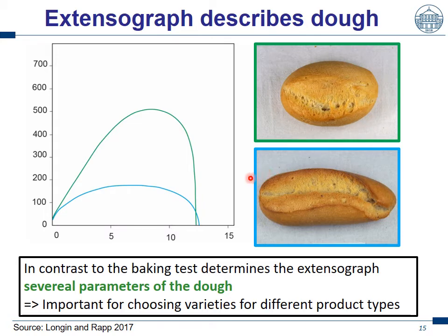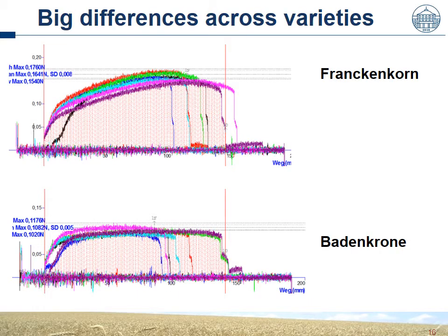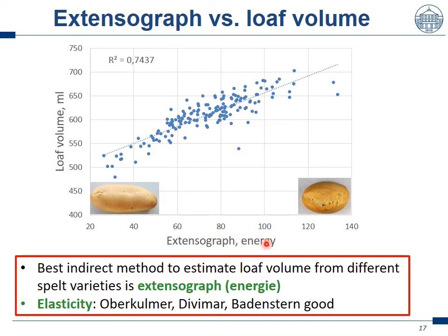We found big differences in the extensograph between varieties. A well-known, very good quality spelt variety called Frankenkorn showed an excellent extensograph — a lot of energy and a long curve. While another variety, Baden-Krone, had low volume and a rapid breakdown of the dough — poor quality. When we look at the energy data of the extensograph, we see a big variation from very low values around 20 to very high values larger than 120. Big variation available between the different varieties.